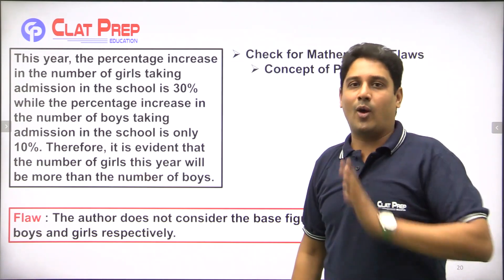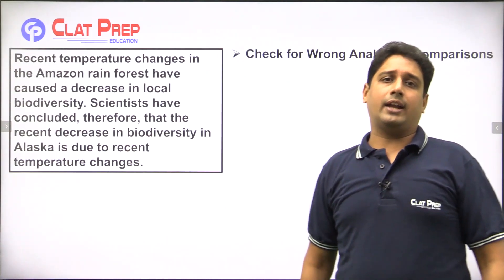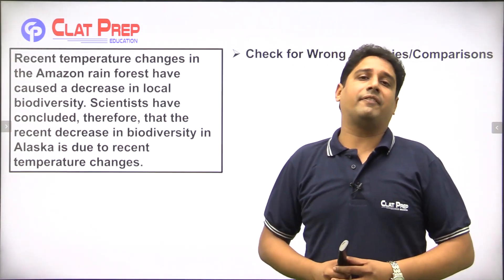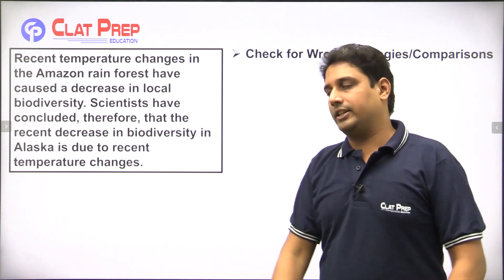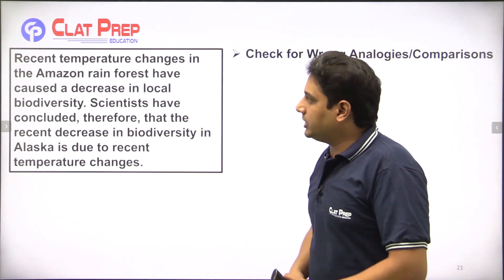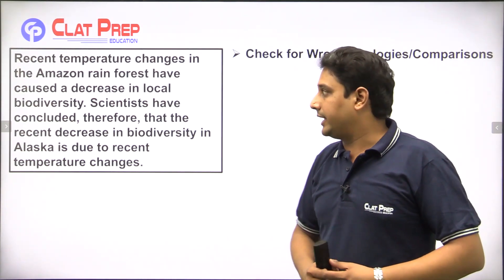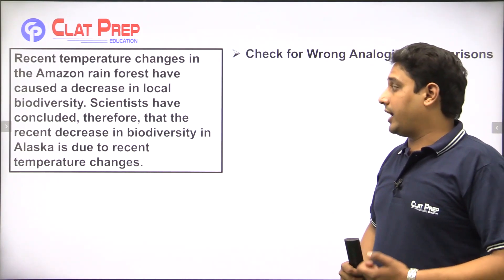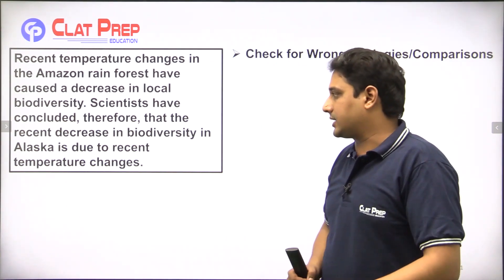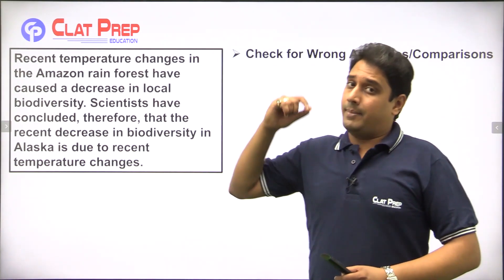So that was the flaw in the argument. Next flaw — wrong analogies or wrong comparisons. Let's see the argument: recent temperature changes in the Amazon rainforest have caused a decrease in local biodiversity. Scientists have concluded therefore that the recent decrease in biodiversity in Alaska is also due to recent temperature changes.